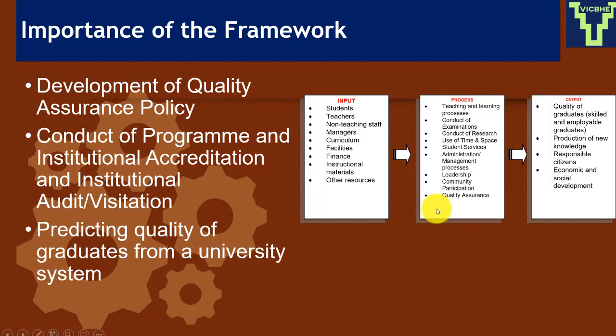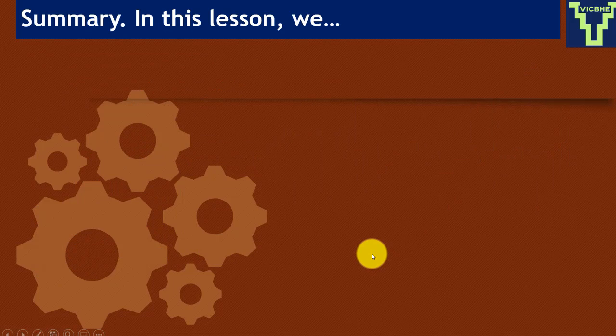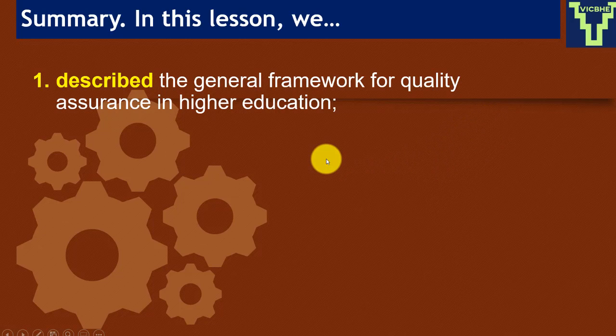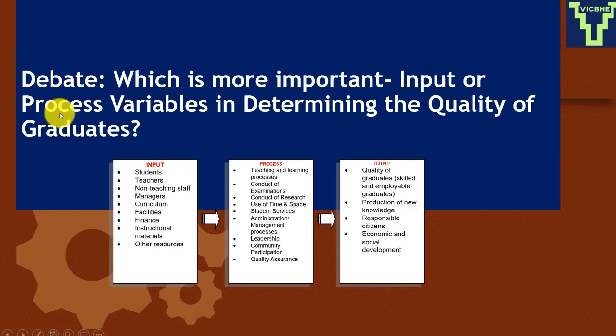Another dividend of this training: I'm going to give you a software where you plug in all this data collected from your institution over, say, a five-year period and be able to predict the quality of graduates your institution will be producing. This framework, as Professor Osha would say, is very very important. So what we learned in this lesson: we described the general framework for quality assurance, identified the different elements, and stated the importance of the framework in the conduct of quality assurance activities.